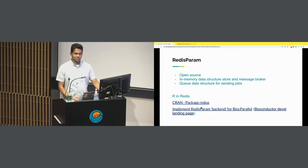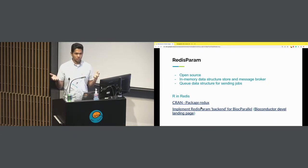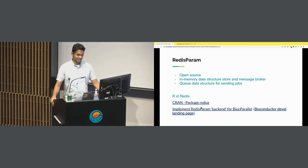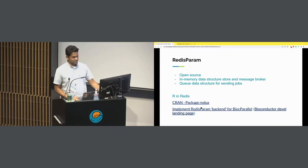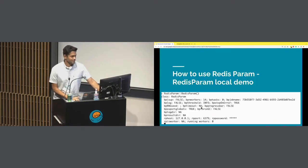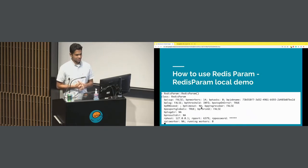RedisParam is open source and available in Bioconductor — it's a new package in Bioconductor devel. It's an in-memory data structure that stores objects and passes them to different workers. It's essentially a queue: whoever goes in first comes out first. There are a few packages in R that work with Redis — one is called Redux, which is in CRAN, and RedisParam is in Bioconductor.